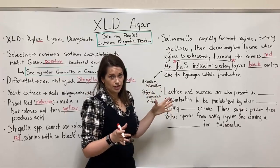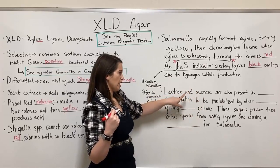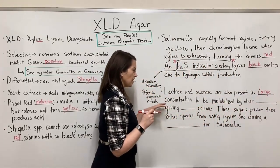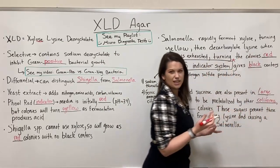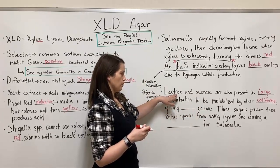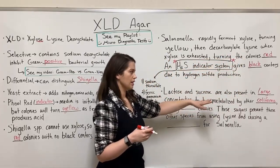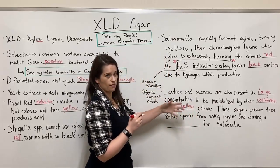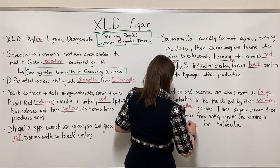There are also a couple of other sugars in XLD Agar: lactose and sucrose, which are present in large quantities. These are there to prevent false positives. Other coliforms — like E. coli — that may also be present in the sample prefer lactose and sucrose over lysine. So they will use up the large amounts of lactose and sucrose available and result in yellow colonies, which prevents these other species from using the lysine and causing a false positive for Salmonella.